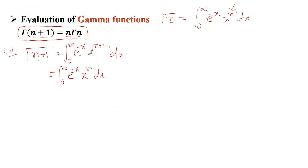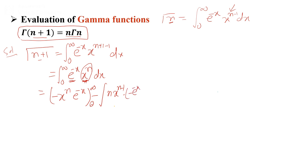The integral becomes 0 to infinity of e raised to power minus x, x raised to power n, dx. Now apply integration by parts: the first function is x raised to power n, and the integration of e raised to power minus x gives minus sign. Evaluating from 0 to infinity, the boundary terms vanish — e raised to power minus infinity is 0, and x raised to power 0 at x=0 is also 0.